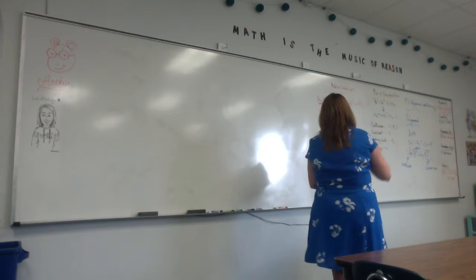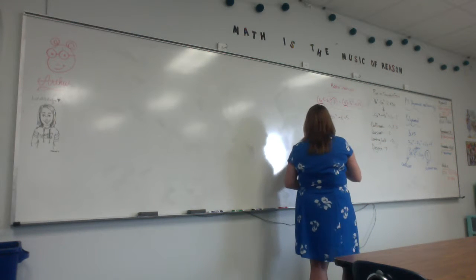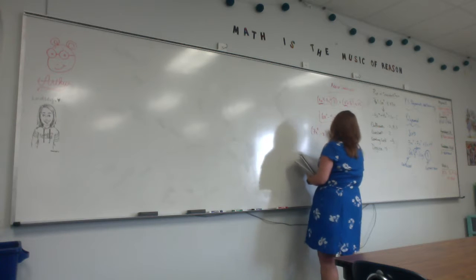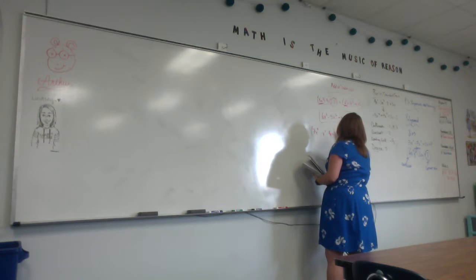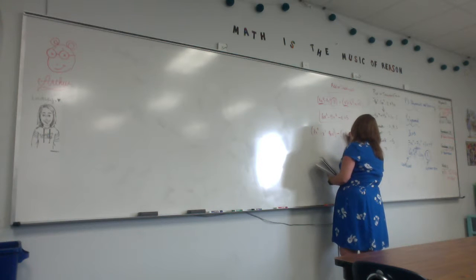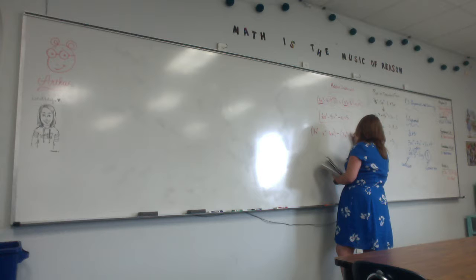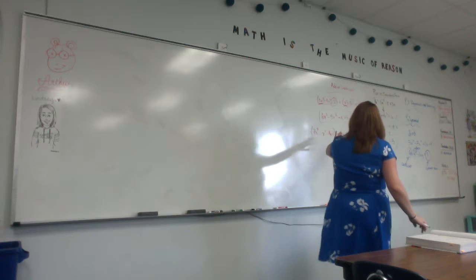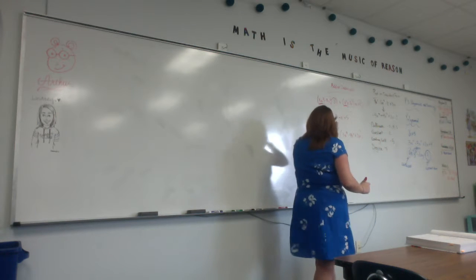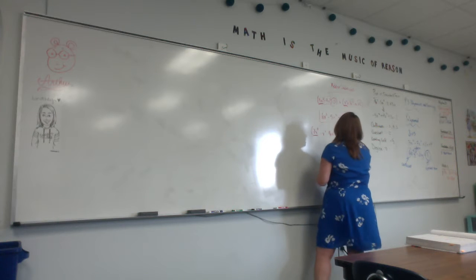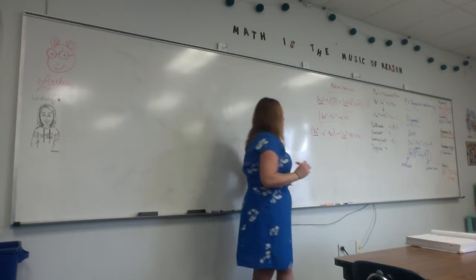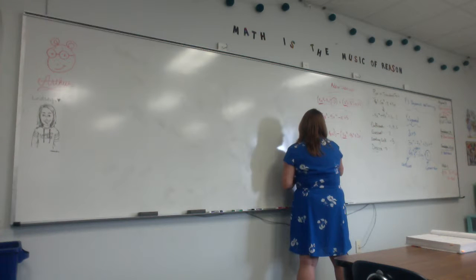What happens if I have 7x to the 4th minus x squared minus 4x plus 2 minus parentheses 3x to the 4th minus 4x squared plus 3x? This is where people mess up a lot — this negative has to be distributed into each of these portions. So here I have 7x to the 4th, but here I have a negative 3x to the 4th. What's 7x to the 4th minus 3x to the 4th? 4x to the 4th.